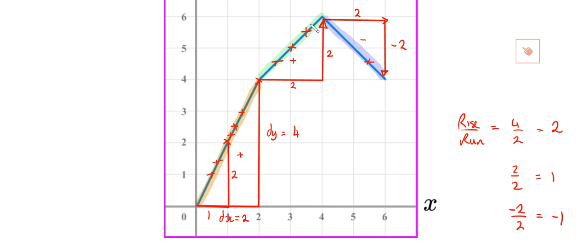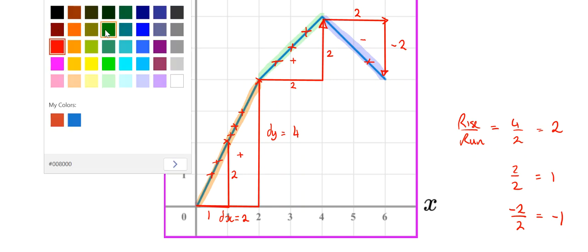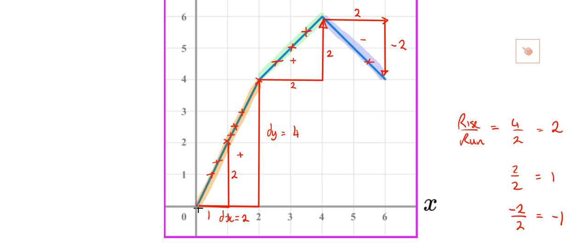Rate of change is when one variable changes with respect to the other. Now, an instantaneous rate of change is what I've just been doing with you. But an average rate of change is when we have to consider what happened when I went from zero all the way to six.